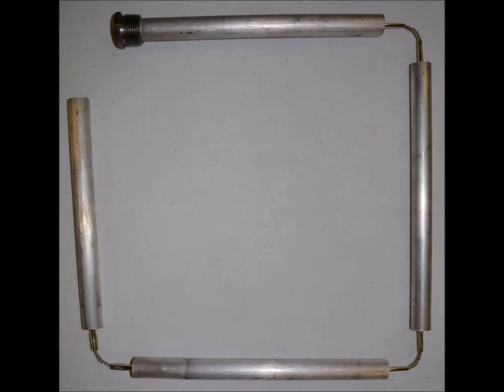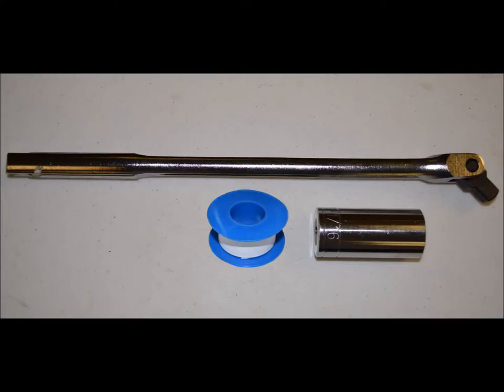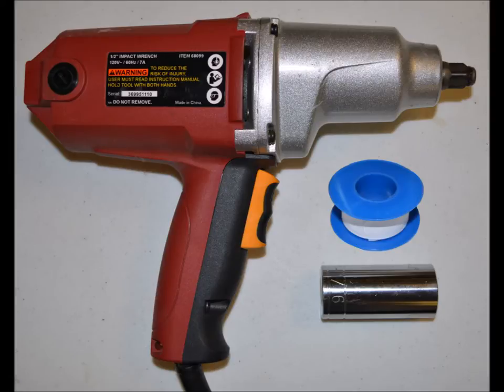You will need a new flexible plug-type anode rod, a breaker bar and a 1 and 1/16 inch socket and thread sealant, or an impact wrench and a 1 and 1/16 socket and thread sealant.